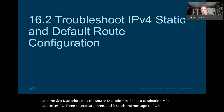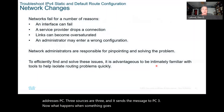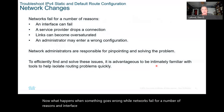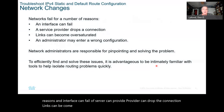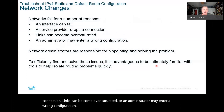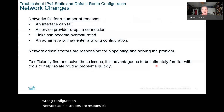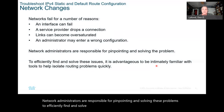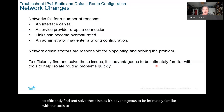Now, what happens when something goes wrong? Networks fail for a number of reasons: an interface can fail, a service provider can drop the connection, links can become oversaturated, or an administrator may enter a wrong configuration. Network administrators are responsible for pinpointing and solving these problems. To efficiently find and solve these issues, it's advantageous to be intimately familiar with the tools that help isolate routing problems quickly.